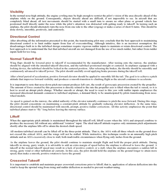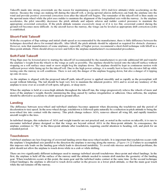Crosswind Takeoff: it is important to establish and maintain proper crosswind corrections prior to liftoff — application of aileron deflection into the wind to keep the upwind wing from rising and rudder deflection as needed to prevent weathervaning. Takeoffs made into strong crosswinds are the reason for maintaining a positive AOA, tail-low attitude, while accelerating on the runway. Because the wings are making lift during the takeoff roll, a strong upwind aileron deflection can bank the airplane into the wind and provide positive crosswind correction soon after the takeoff roll begins. The remainder of the takeoff roll is then made on the upwind main wheel while the pilot uses rudder to maintain alignment of the longitudinal axis with the runway. As the airplane accelerates, the pilot smoothly decreases pitch attitude and adjusts aileron and rudder pressures to maintain the appropriate crosswind correction. As the aircraft leaves the runway, the wings can be leveled as appropriate drift correction — crab — is established.